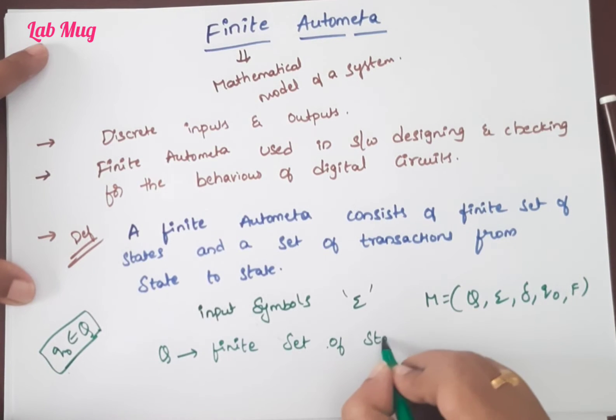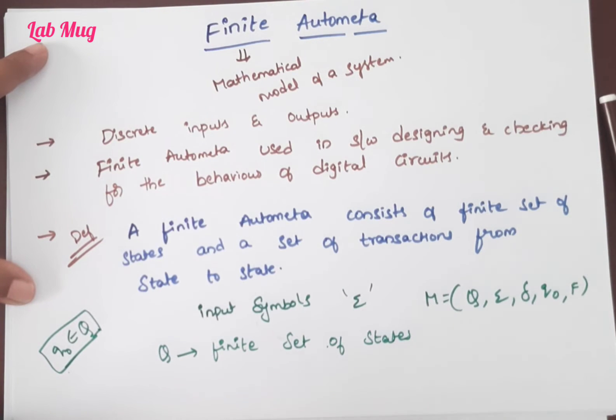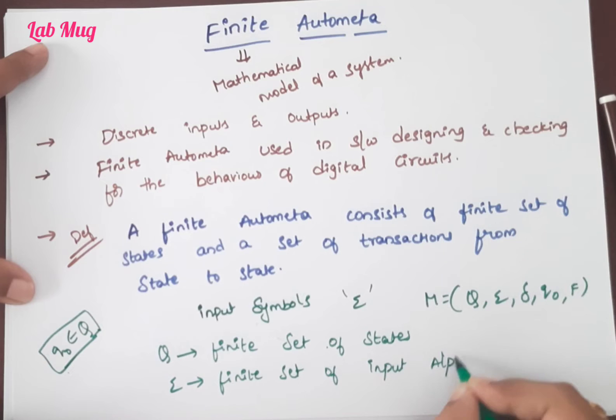From M, Q is the finite set of states. Next, what is sigma? We just discussed input symbols. It is a finite set of symbols. Symbols are nothing but alphabets or anything. So sigma represents the finite set of input alphabets or symbols.